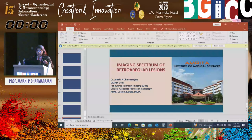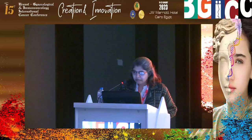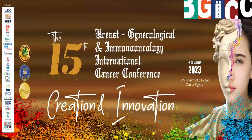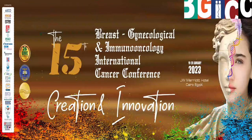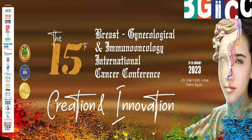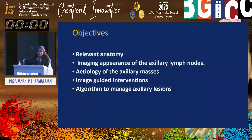Now moving to the second topic — the diagnostic approach to axillary lesions. The relevant anatomy, imaging appearance of axillary lymph nodes, etiology, image-guided interventions, and algorithm will be covered. The axilla contains axillary veins, arteries and branches, the brachial plexus and branches, intercostal nerves, lymph nodes, fat, fibrous tissue, and vestigial breast tissue.